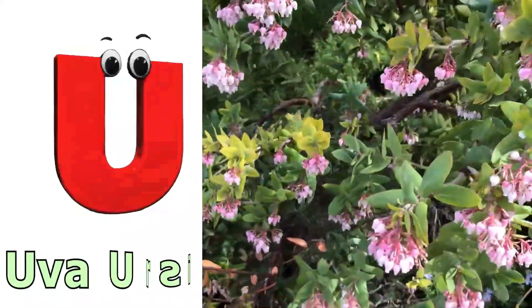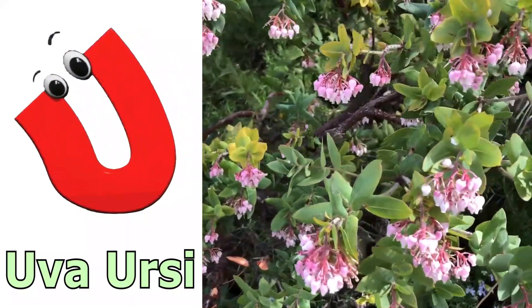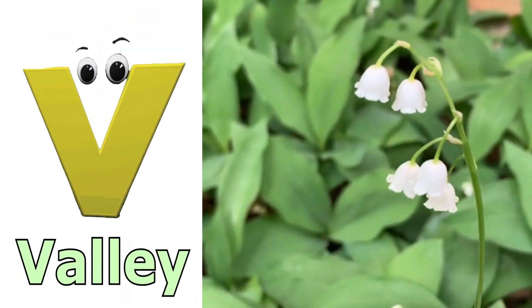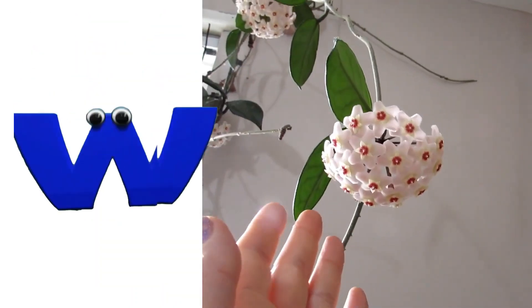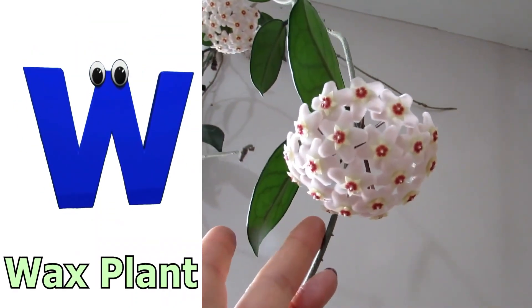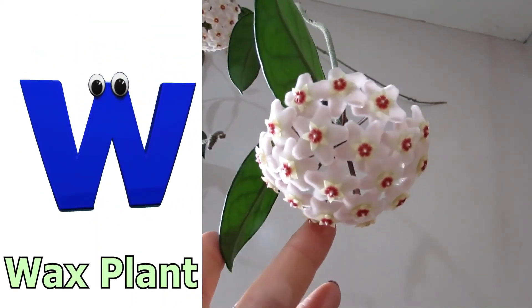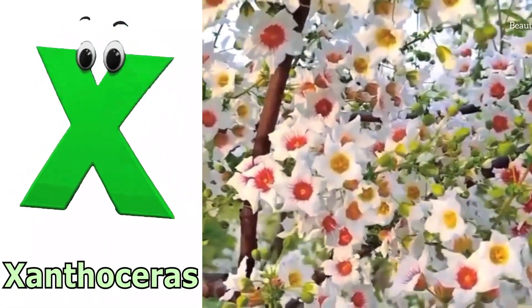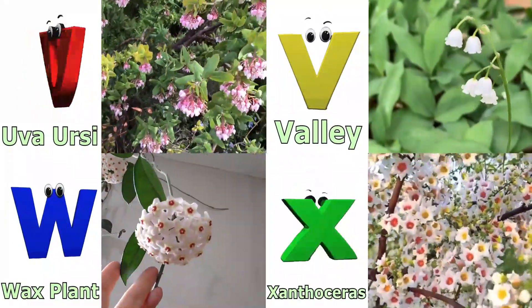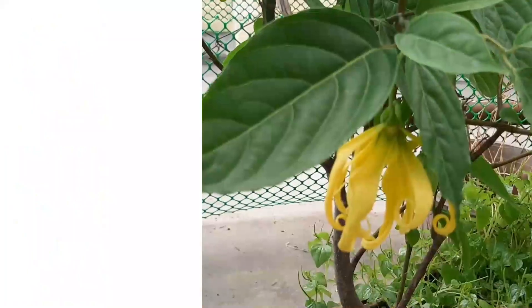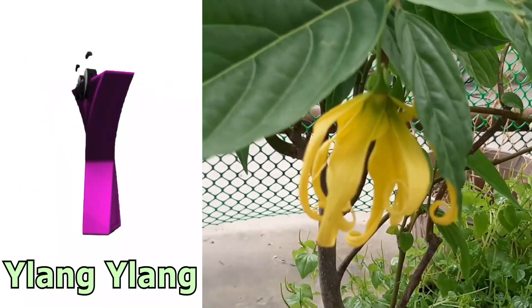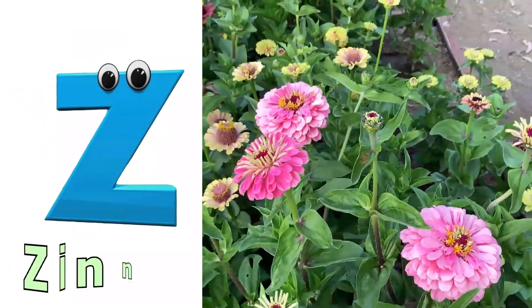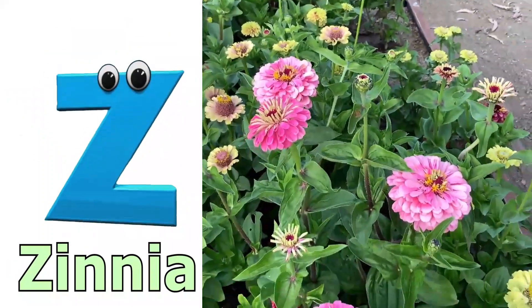U is for Uva Ursi. V is for Valley. W is for Waxplant. X is for Xanthosaurus. Y is for E-Long. Z is for Zinnia.